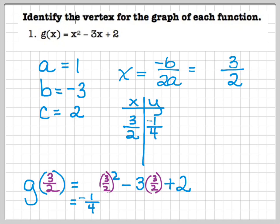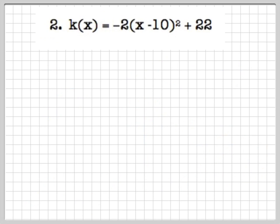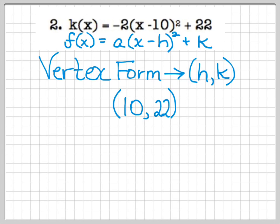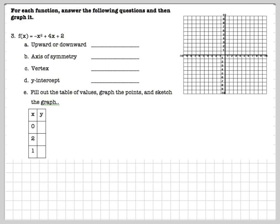Question two is not so difficult — you can just look at it and tell what the vertex is. You just have to remember that x misbehaves in vertex form, so the vertex is going to be at (10, 22).